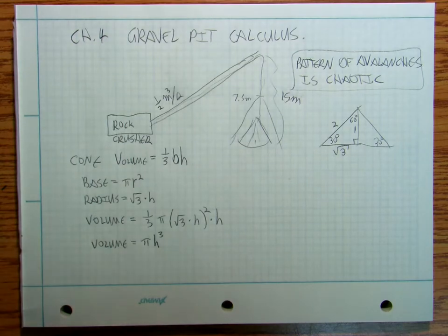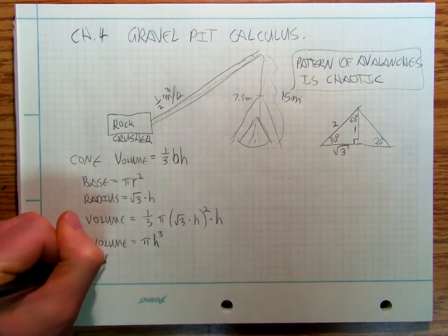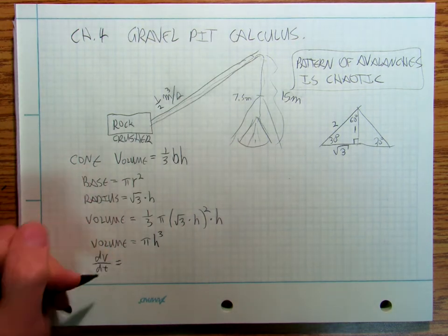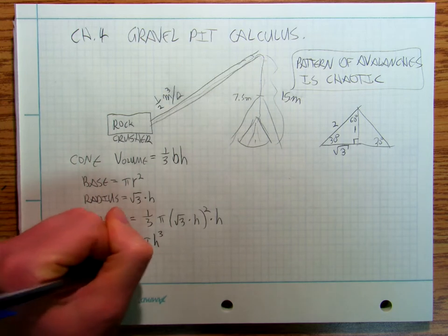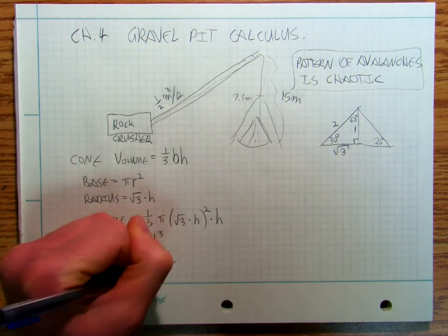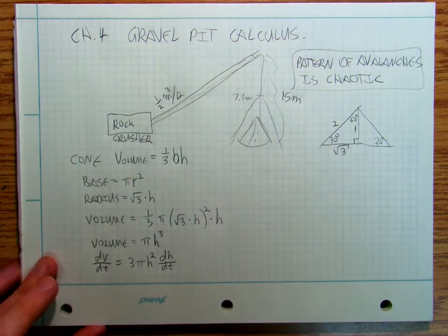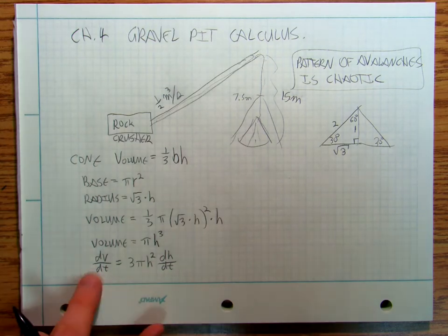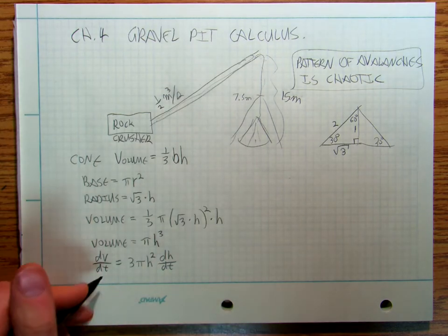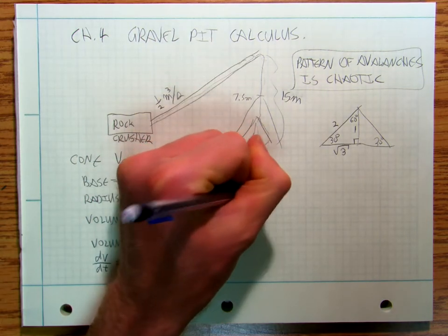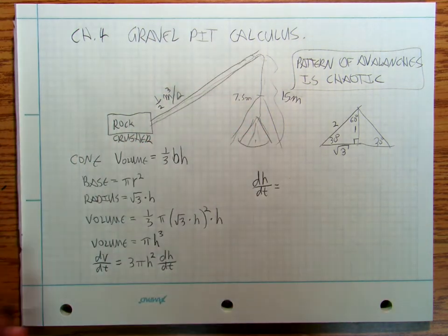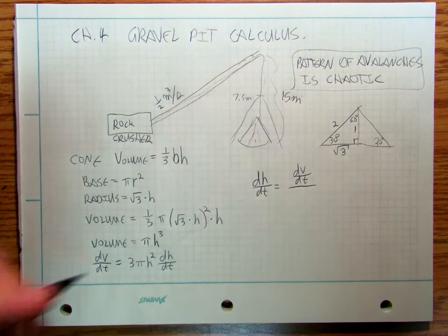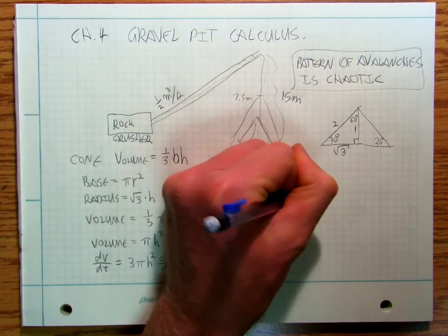Now, I say that my dv/dt, how fast the volume is changing, is going to be equal to 3 pi h squared dh/dt. So let's run some numbers. Let's just change that around, dh/dt is equal to dv/dt divided by 3 pi h squared.